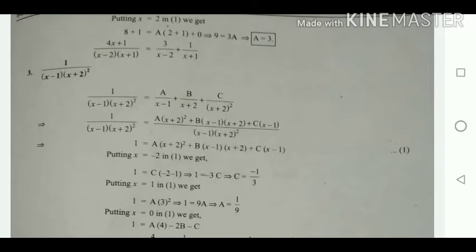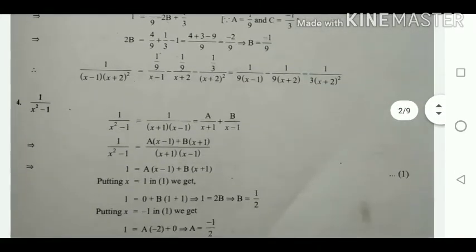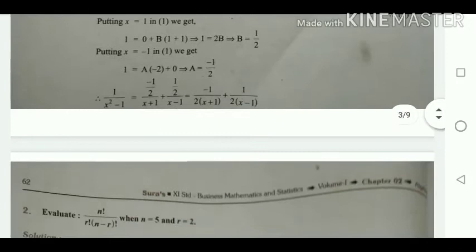Substituting A = 3 and B = 1, the partial fraction decomposition of (4x + 1)/((x - 2)(x + 1)) is 3/(x - 2) plus 1/(x + 1). Likewise, do the remaining sums in this exercise.